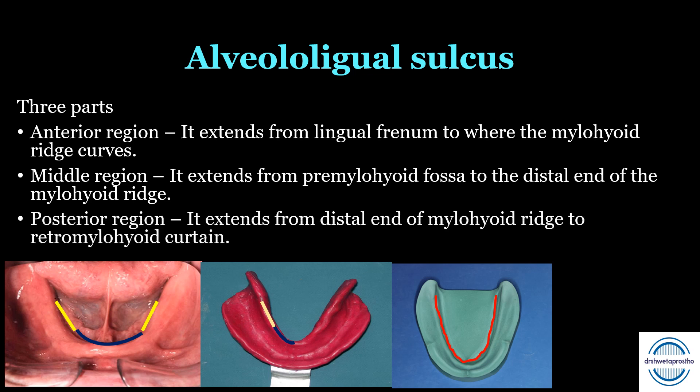Third is the posterior region, extending from the distal end of the mylohyoid ridge to the retromylohyoid curtain. The lingual flange turns into the retromylohyoid fossa and completes the typical S-form of the lingual flange, as we can see in the picture. This posterior region is no longer affected by the mylohyoid muscle.